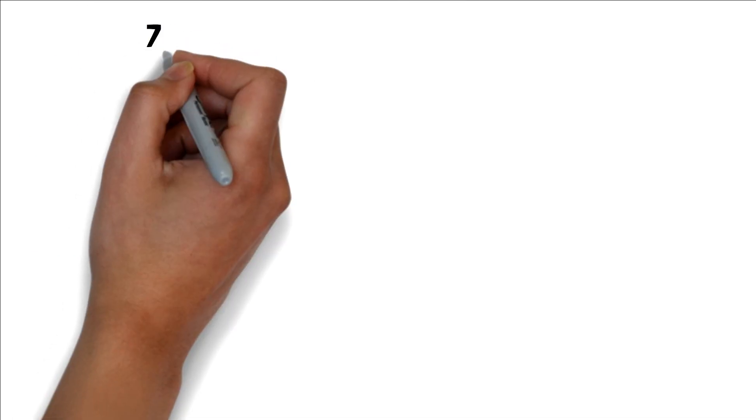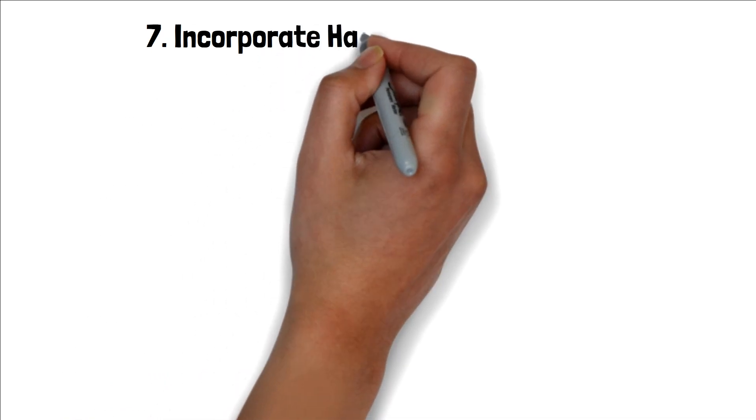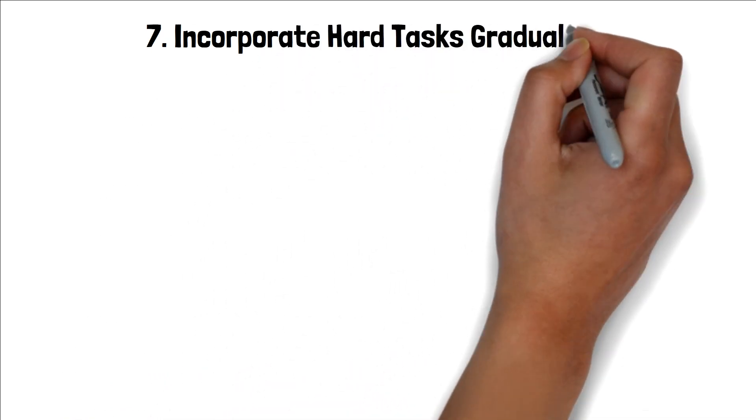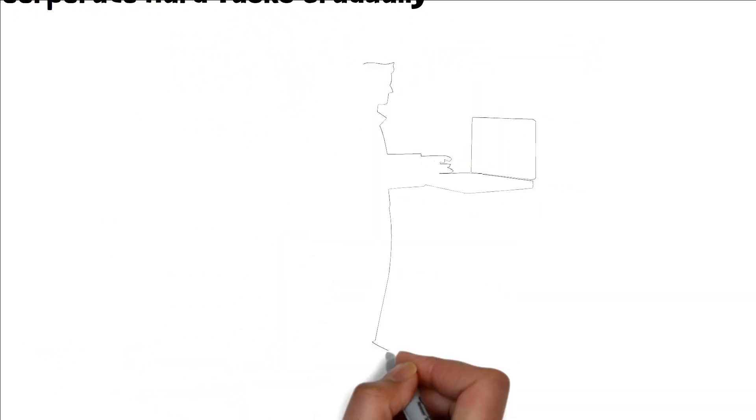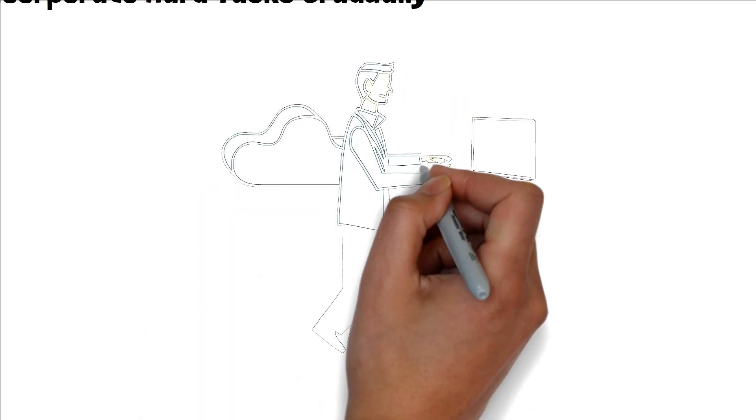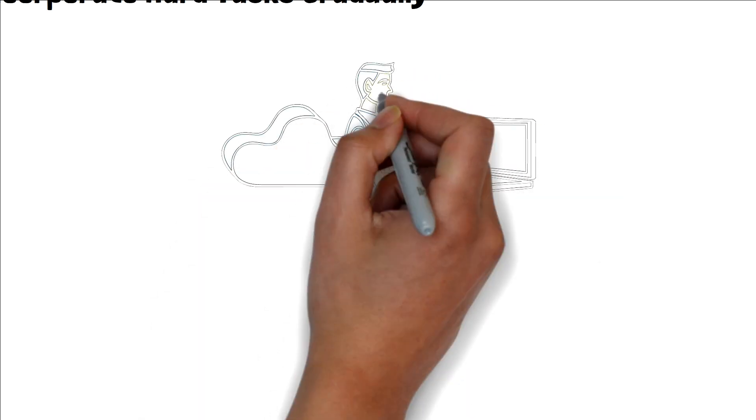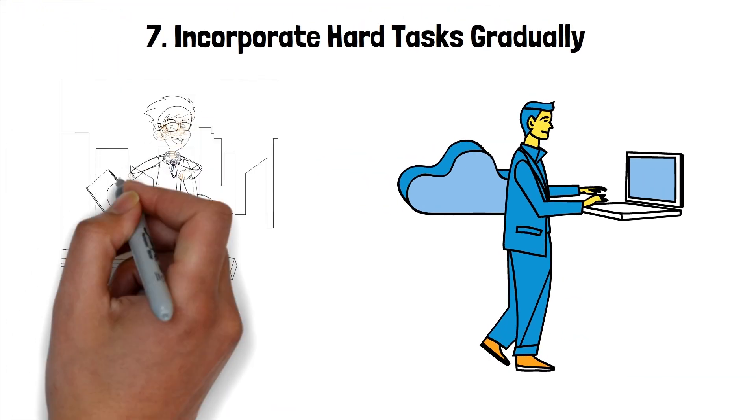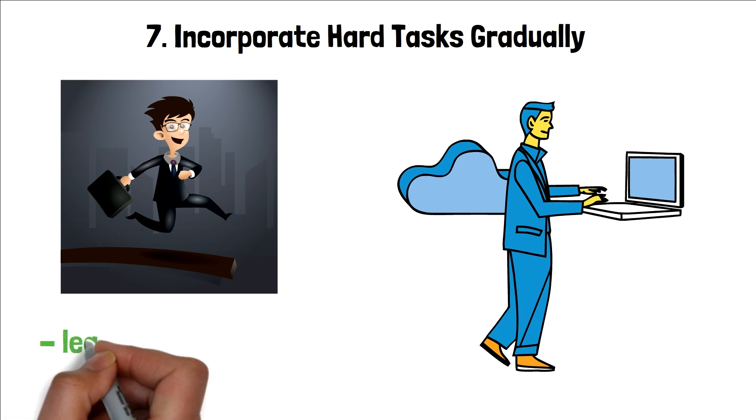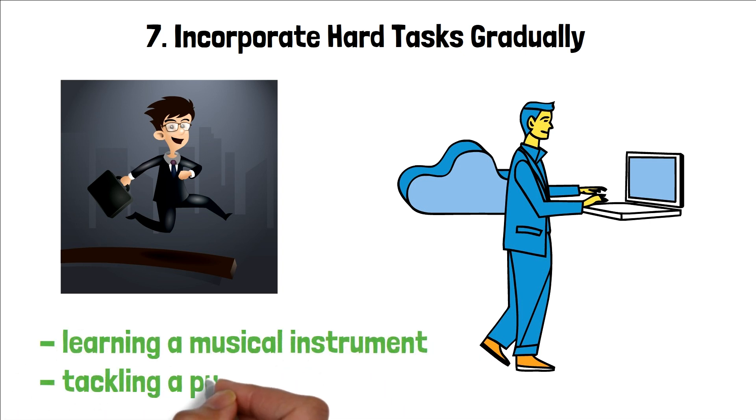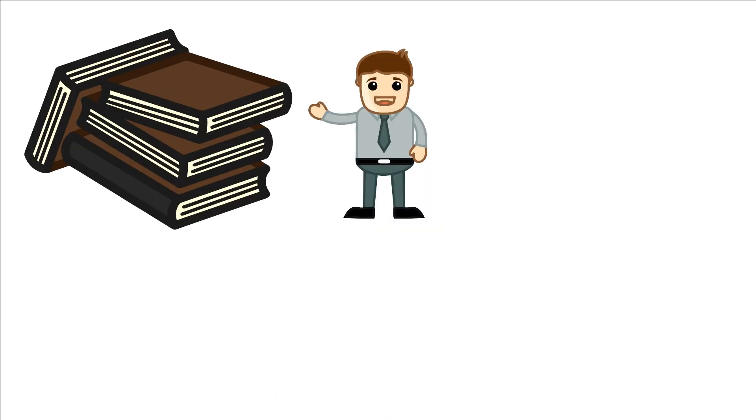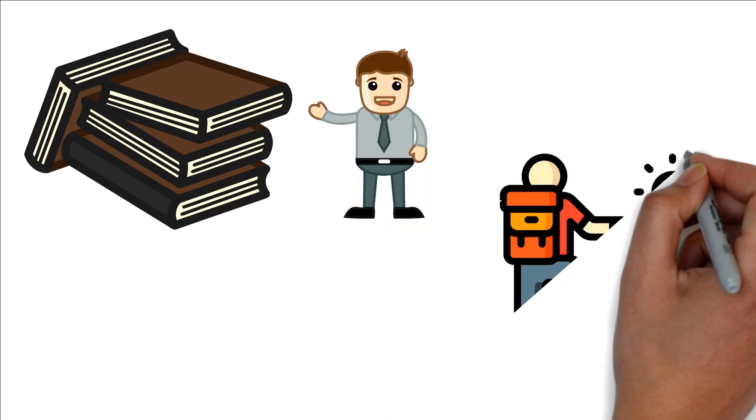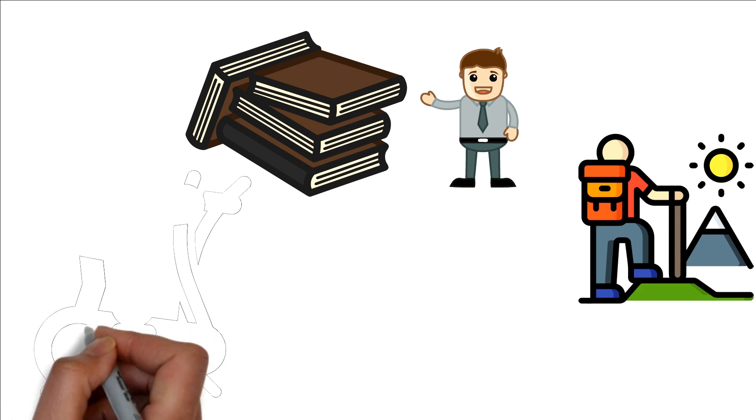7. Incorporate hard tasks gradually. After a dopamine detox, reintroducing complexity into your life can be immensely rewarding. Begin by setting small yet slightly challenging goals each day. This might involve taking on a new hobby like learning a musical instrument or tackling a puzzle. Perhaps you can set a reading goal with a slightly complex book or initiate a physical challenge like a longer hike or a new fitness routine.